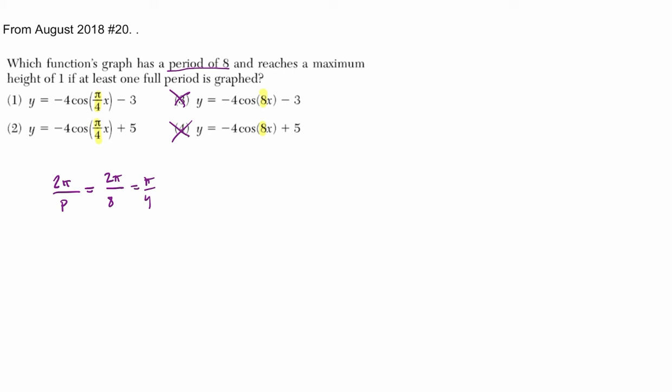Now, they say that it has a maximum height of 1. And what you can think about there is to your midline, which is this number here, and then add the absolute value of this coefficient there to reach a maximum and subtract it to reach a minimum.